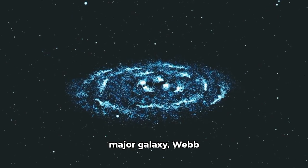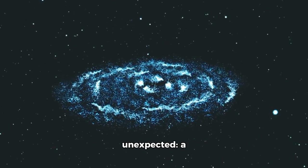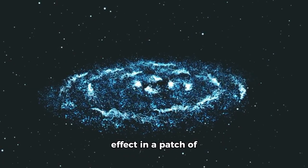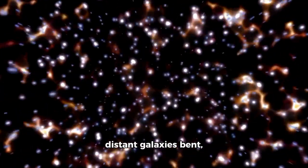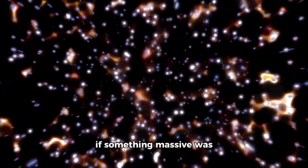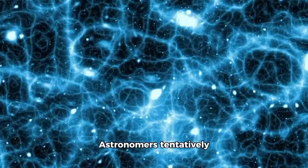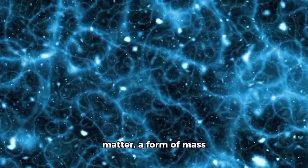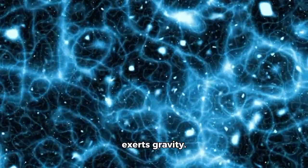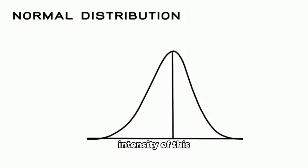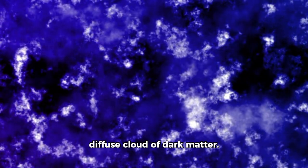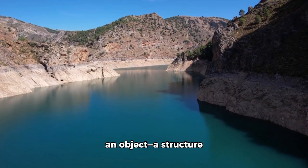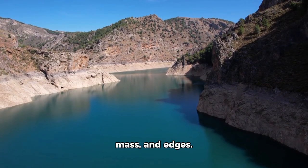Far from any major galaxy, Webb identified something unexpected: a gravitational lensing effect in a patch of space where nothing visible exists. No galaxies, no stars, no dark matter—yet light from distant galaxies bent, curved, and distorted as if something massive was hiding there. Astronomers tentatively attributed this to dark matter, a form of mass we can't see but which exerts gravity. But the exactness and intensity of this distortion created a problem. It was too strong, too localized. It didn't behave like a diffuse cloud of dark matter. Instead, it behaved like an object of structure with defined symmetry, mass, and edges.